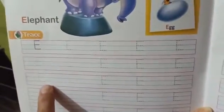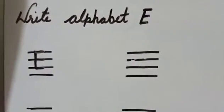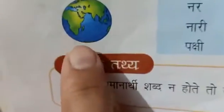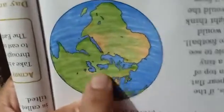So let me write E for elephant. And E for eyes. E for eye. And E for earth. E for earth — I am here at earth. E for earth.